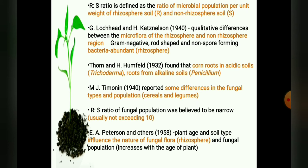In 1932, Thom and H. Hamfeld found that corn roots in acidic soil yielded predominantly Trichoderma, while roots from alkaline soil mainly contained Penicillium.